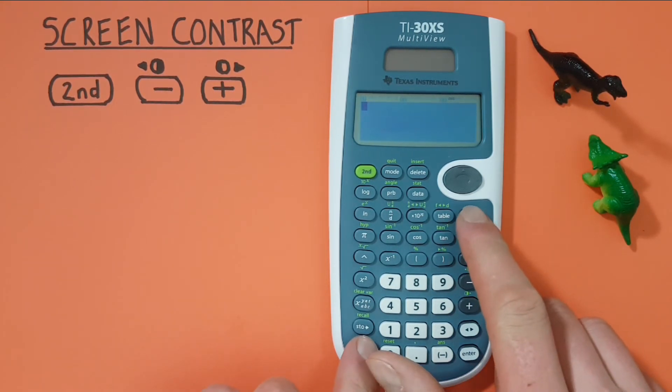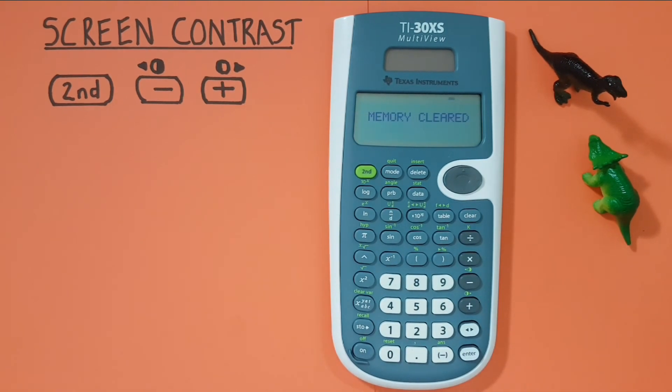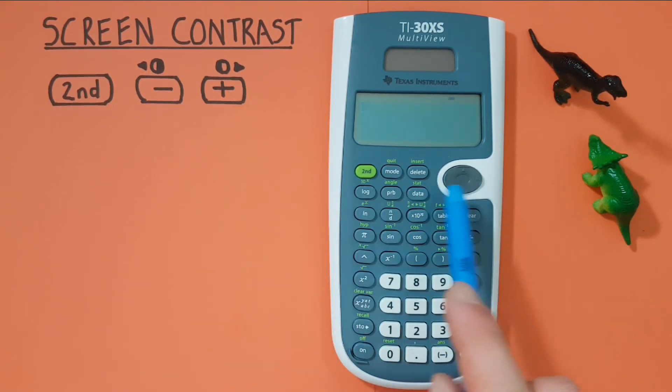The message 'memory cleared' should appear. You can press clear and your screen should go back to its normal contrast.